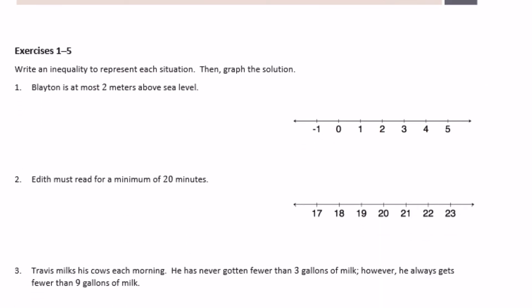Exercises one through five: write an inequality to represent each situation, then graph. Exercise 1: Blayton is at most two meters above sea level. Using B for Blayton, he needs to be less than or equal to two meters above sea level. I put a circle on two, fill it in because it could equal two, and draw the arrow pointing left.